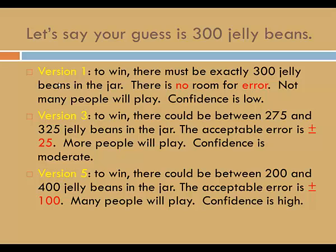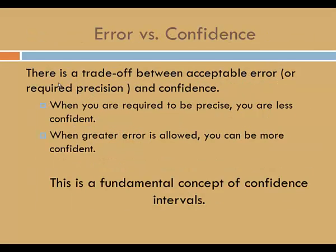In the fifth version, to win, there could be between 200 and 400 jelly beans in the jar. The acceptable error is plus or minus 100. Many people will play. Confidence is high. Notice that the confidence grows as the room for error grows. And so is the relationship between error and confidence in confidence intervals. There is a tradeoff between acceptable error, or required precision, and confidence. When you are required to be precise, you are less confident. When greater error is allowed, you can be more confident. This is a fundamental concept of confidence intervals.